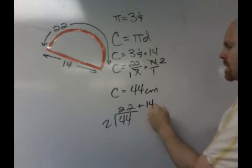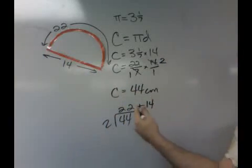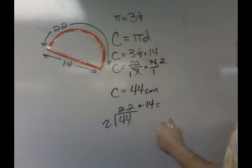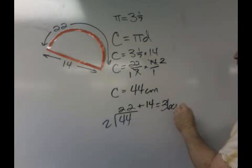So, we would do the 22, and then we would add the 14, which is the diameter, and we would get the complete answer, the perimeter, which is 36 centimeters.